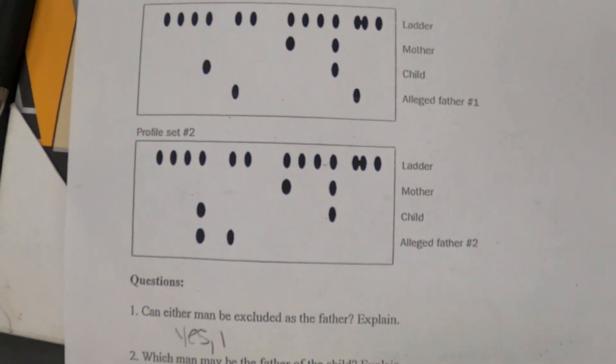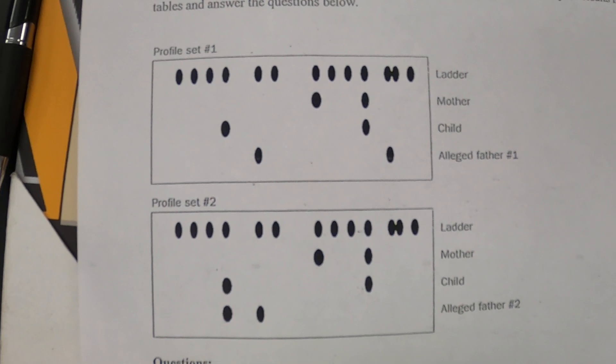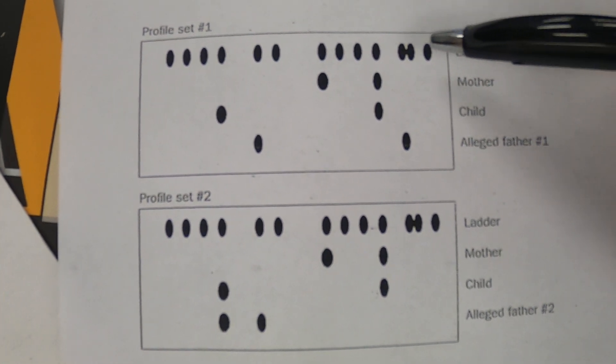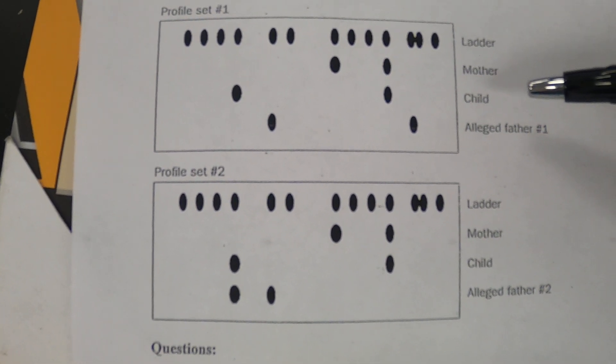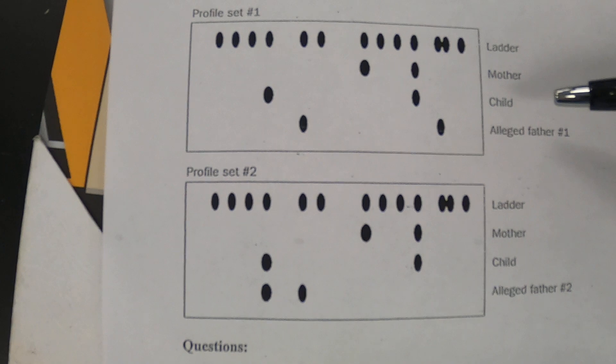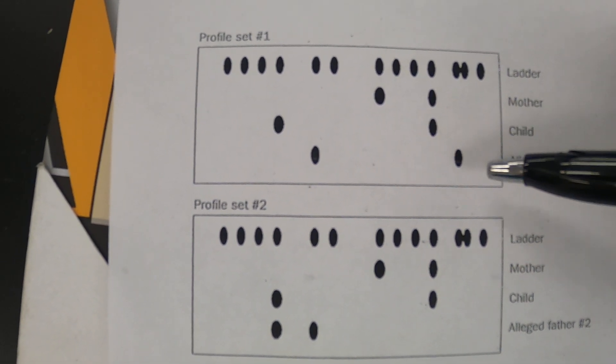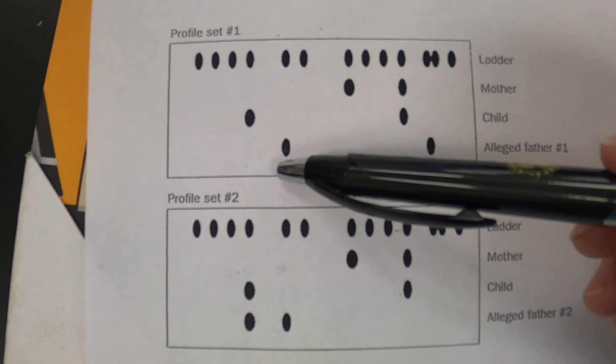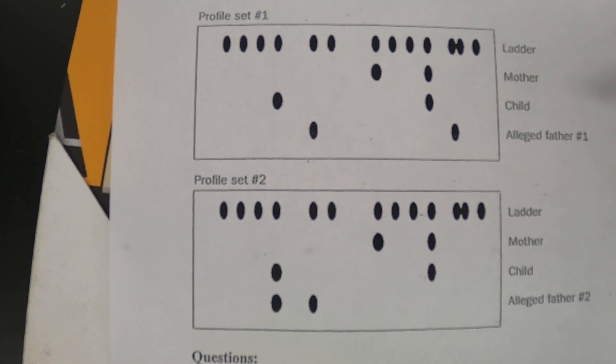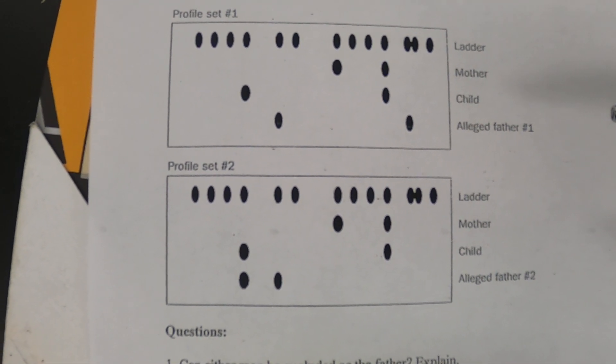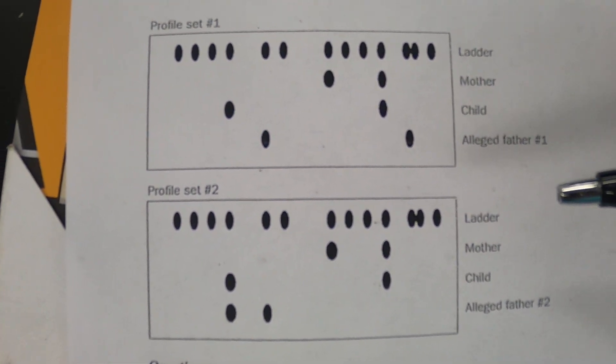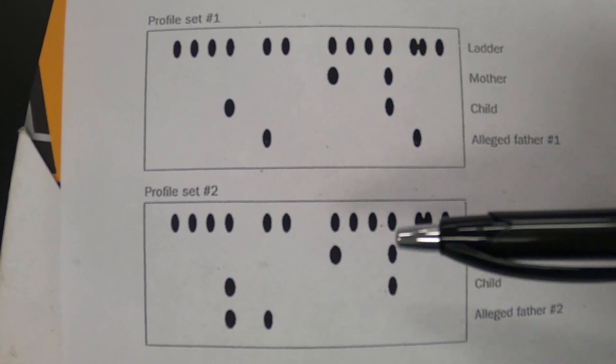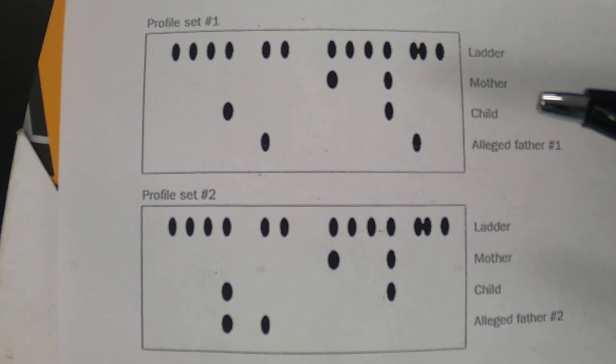So we turn this over and we look now and we see that we have a thing called the ladder. We're going to ignore that for today. We're going to look and see can either man be excluded as the father? Well if we look here at father one, okay that doesn't match anything with this child so father one can be excluded. And then how many probes were used? This is something that kids seem to always get wrong and they want to say that there's like 15 different probes or whatever. Remember you can only use one probe per test.